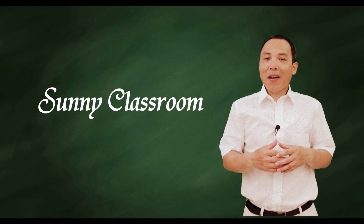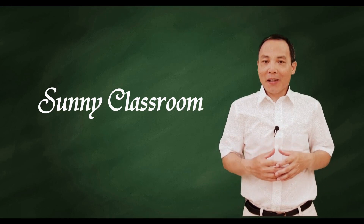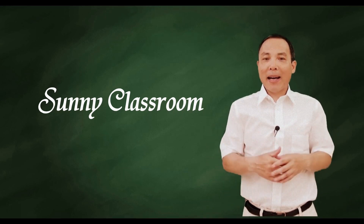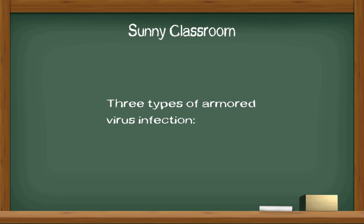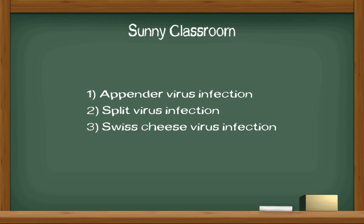Hello, and this is Sunny. Welcome back. Today my topic is three types of armored virus infection: appender virus infection, split virus infection, and Swiss cheese virus infection.